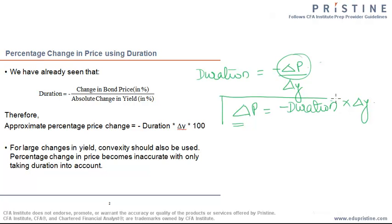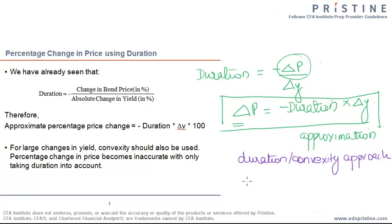Of course, this equation is basically an approximation. If you'd like a more accurate estimate, you can use the duration convexity approach. And if you would like an accurate or the exact answer, you would use the full valuation approach. The duration approach is most appropriate when delta Y is small.